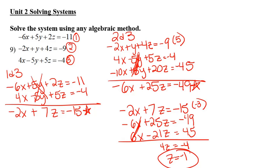Now remember, to get the next variable, you plugged it into one of the guys you starred. I'm going to plug it into this equation here. So negative 2x plus 7 times negative 1, because that's my z, equals negative 15. Negative 2x minus 7 is negative 15. It looks like negative 2x is equal to a negative 8, or x is in fact 4. Woohoo! One more variable.